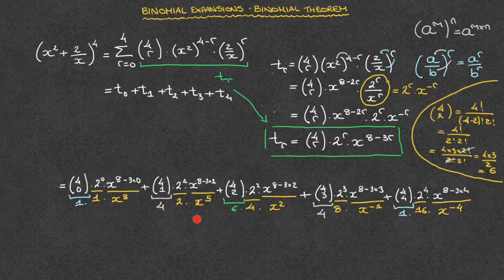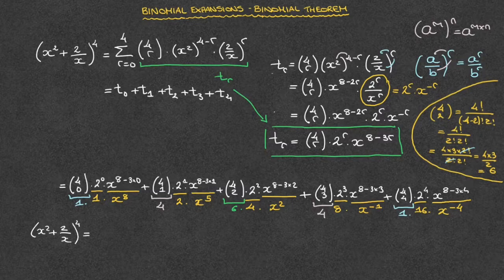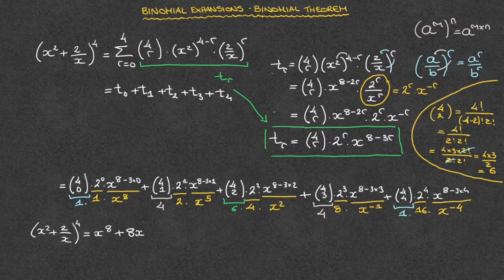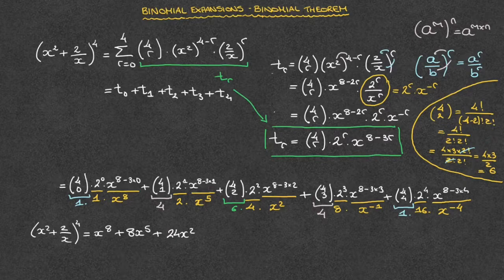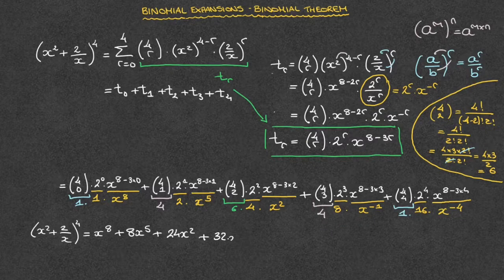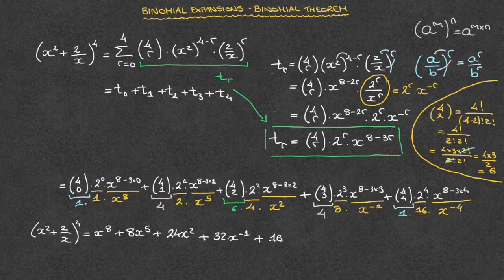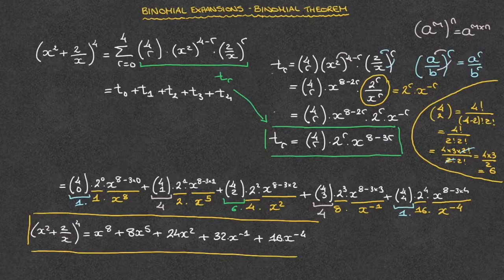At this stage, we're ready to state our final answer. We can now write that x squared plus 2 over x raised to the power of 4 is equal to 1 times 1 times x to the power of 8, which is just x raised to the power of 8, plus 4 times 2 times x to the power of 5, which is 8 times x to the power of 5. We add to that 6 times 4 times x squared, which is 24x squared. We add to that 4 times 8 times x to the power of negative 1, which is 32 times x to the power of negative 1. Finally, we add 1 times 16 times x to the power of negative 4, so that's 16 times x to the power of negative 4. We've just written all of the terms in the expansion of x squared plus 2 over x raised to the power of 4 using the binomial theorem.